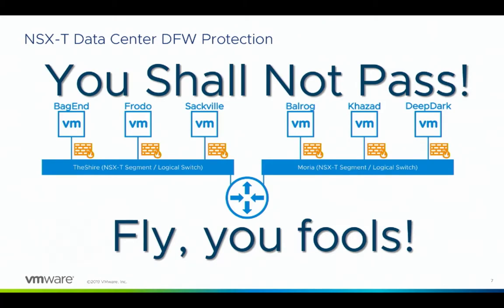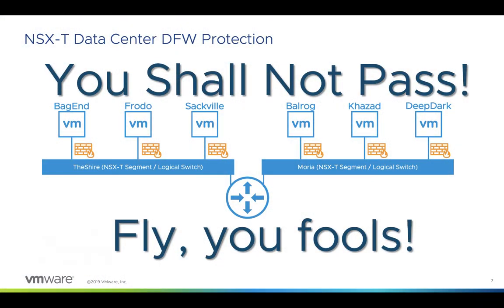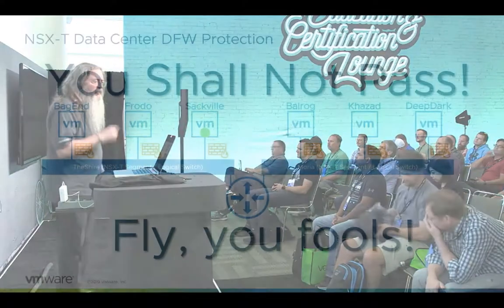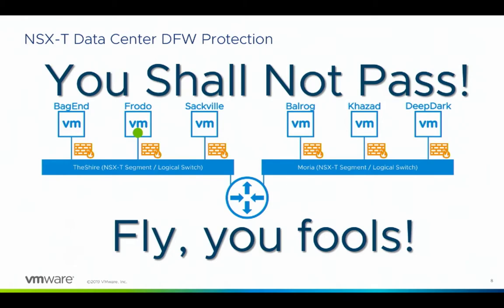On the other hand, the stuff we want to go through - for example, we want to send the Balrog to the Deep Dark places, and we want them to go there fast. The distributed firewall says it will allow that to take place. That's what the firewall is supposed to do: if traffic is allowed, let's get it there. Sackville wants to talk to Frodo - it goes through right away. I'm doing it in memory on the host. Firewall as fast as we can.